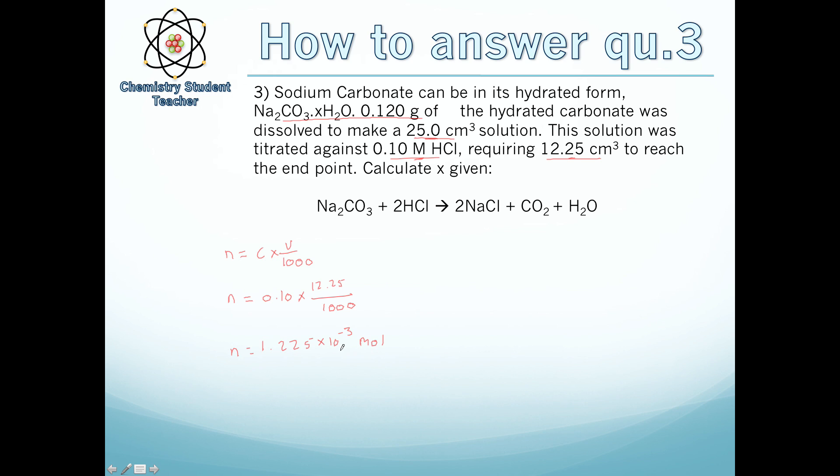Now we know the number of moles and we can use the reaction provided to figure out the ratio. Well, one carbonate reacts with two HCl. As this is the number of moles of HCl, all we have to do is divide that by two to get the number of moles of sodium carbonate with water of crystallization. Doing that, you get number of moles of carbonate is 6.125 × 10⁻⁴ moles.